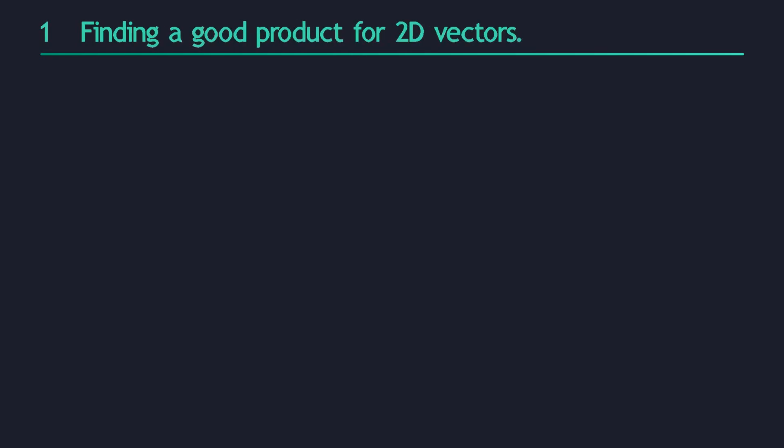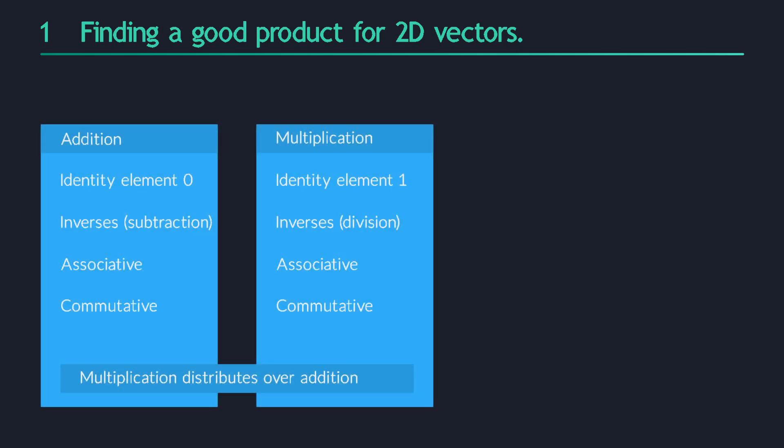Many videos ago we gave ourselves a very difficult task. We went on a quest to find a multiplication for two-dimensional vectors. We wanted our multiplication to have all of the familiar properties of real number multiplication, such as associativity and commutativity.